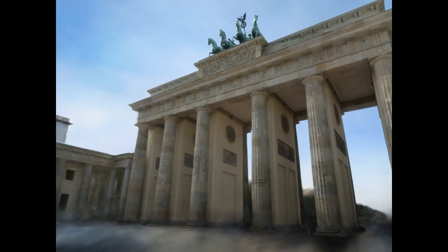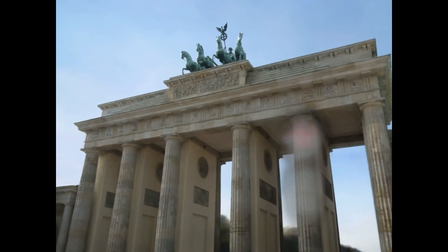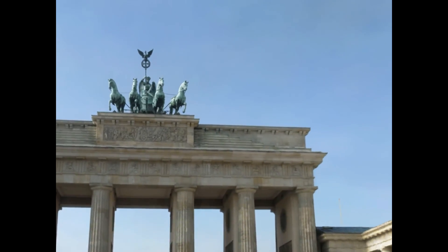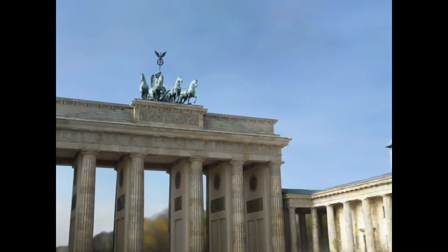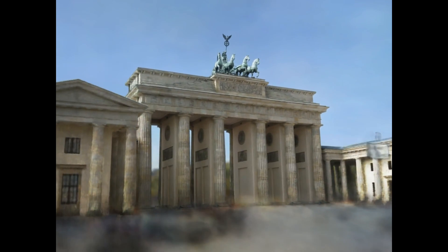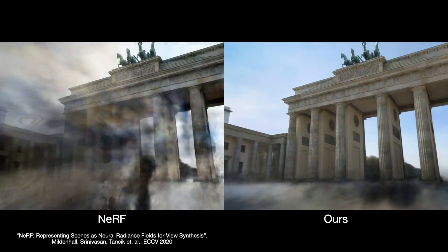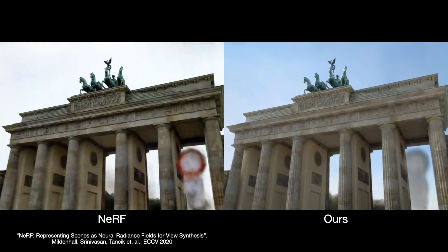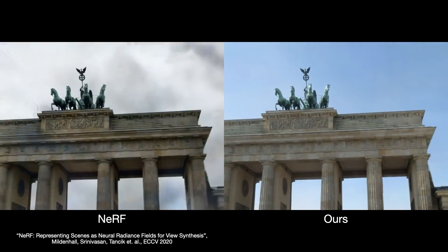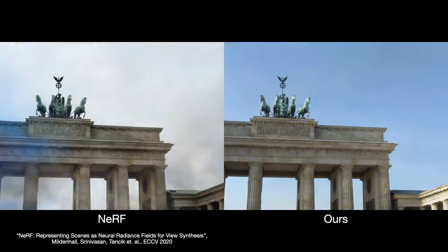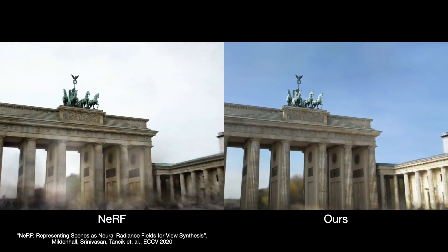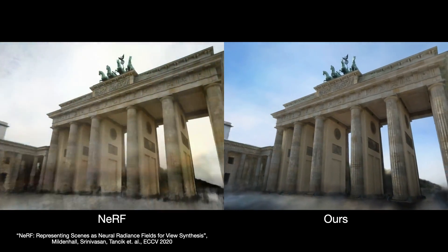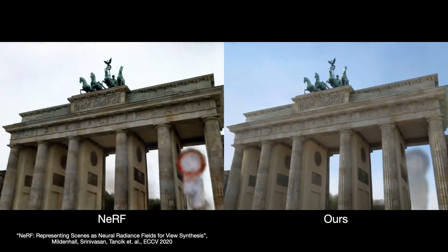Here's a fly-through video of that Brandenburg Gate dataset where we're moving the camera but not changing the appearance. Here's a side-by-side with the original neural radiance fields paper, which has some significant artifacts because it doesn't have a way to account for transient occluders or variable appearance.